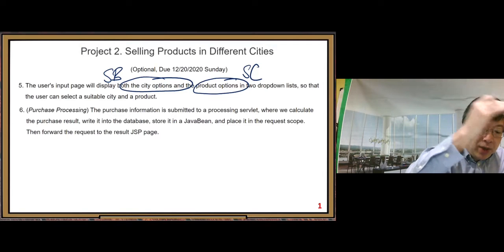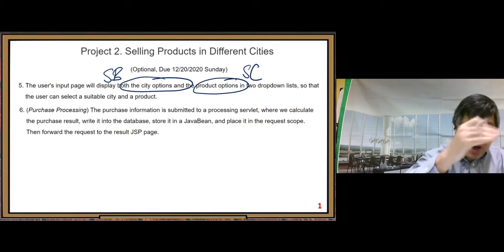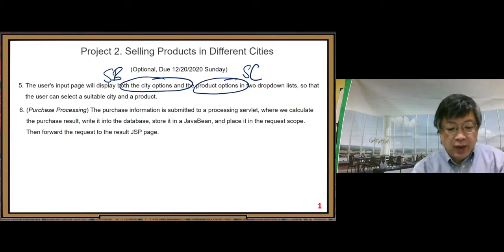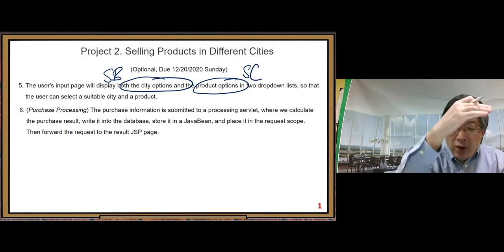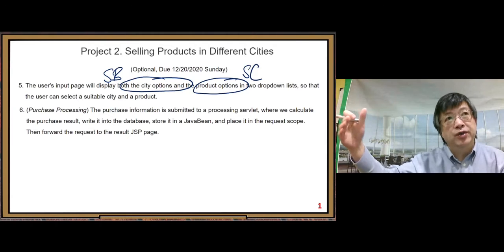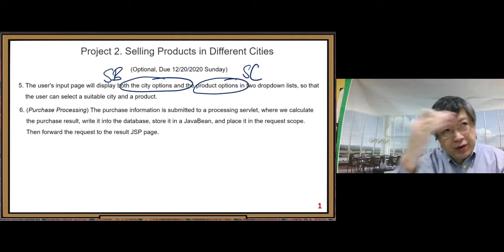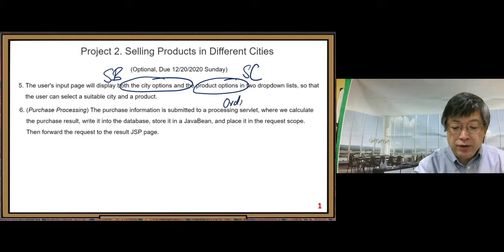Requirement number six — purchase processing: the purchase information is submitted to a processing servlet, which we call the order servlet. So we will develop a new servlet called order servlet.